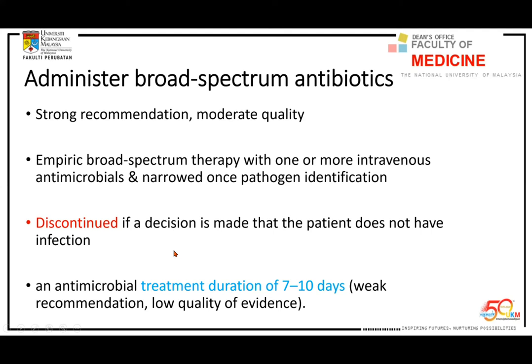When hemodynamics are unstable, tissue perfusion is poor and antibiotics won't reach infected parts of the body effectively. Increased cardiac output can also rapidly clear blood antibiotic levels, reducing efficacy. We also need to consider extracellular volume in edematous patients. I want to highlight serum albumin less than 30 — hypoalbuminemia will really reduce antibiotic efficacy. Antibiotic treatment should be 7 to 10 days, not 3, 4, or 5 days.